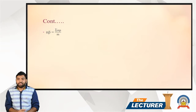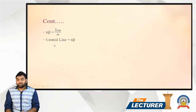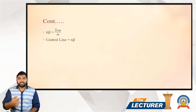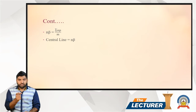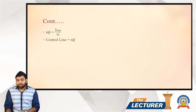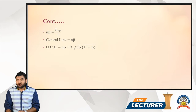The formula for np-chart: np̄ is equal to sigma(np) divided by m. The central line is equal to np̄. The formula for the upper control line (UCL) is: np̄ plus 3 times the square root of np̄ into bracket (1 minus p̄).